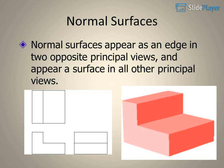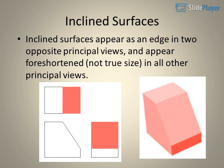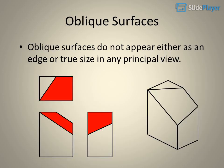Normal surfaces appear as an edge in two opposite principal views and appear as a surface in all other principal views. Inclined surfaces appear as an edge in two opposite principal views and appear foreshortened — not true size — in all other principal views. Oblique surfaces do not appear either as an edge or true size in any principal view.